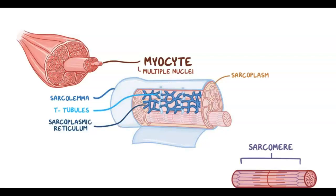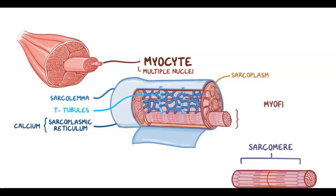The sarcoplasmic reticulum stores lots of calcium, and it runs parallel to the T-tubules. The sarcoplasm is filled with stacks of long filaments called myofibrils, and each myofibril consists of contractile proteins and regulatory proteins.